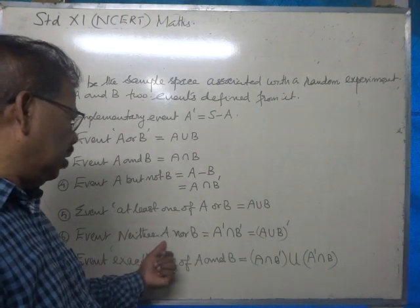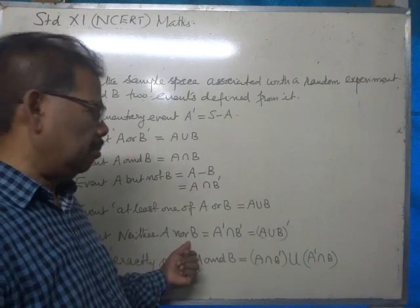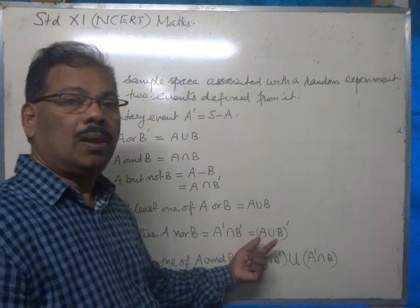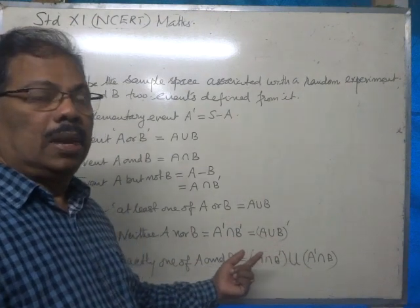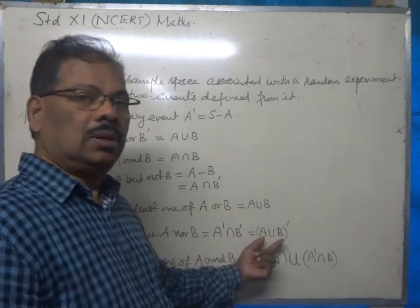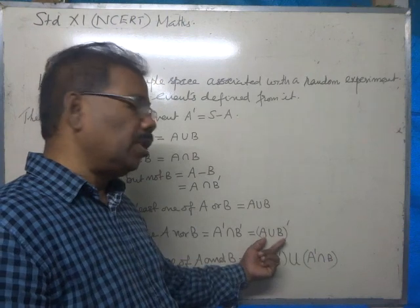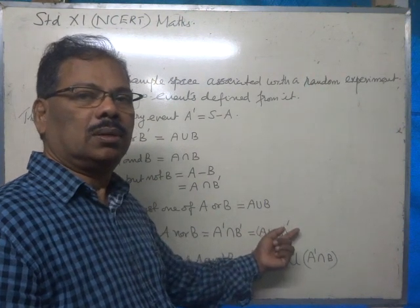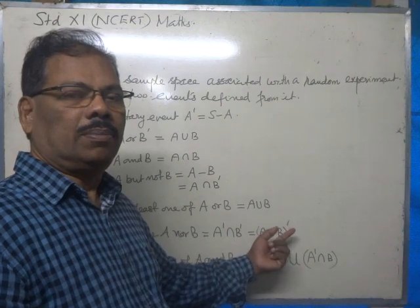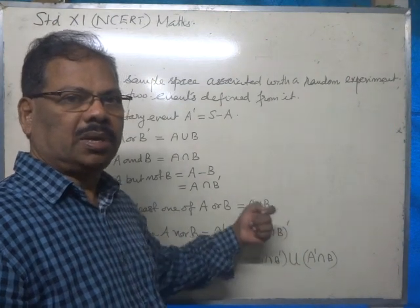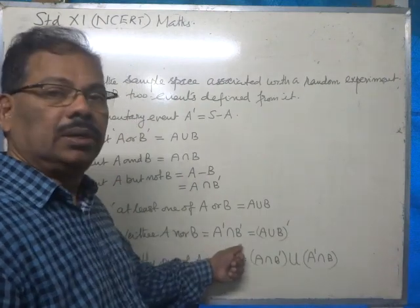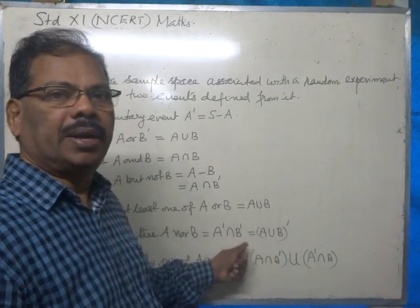Neither A, neither A nor B. That is, we can take the elements of A union B complement from the sample space. From the sample space, we have to subtract A union B. That is, A dash intersection B dash.